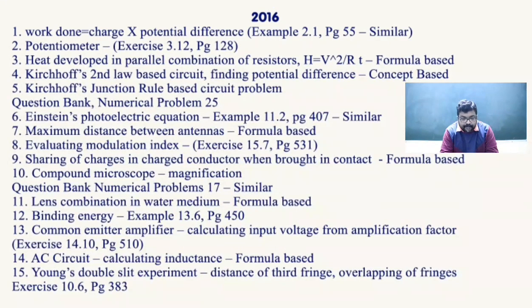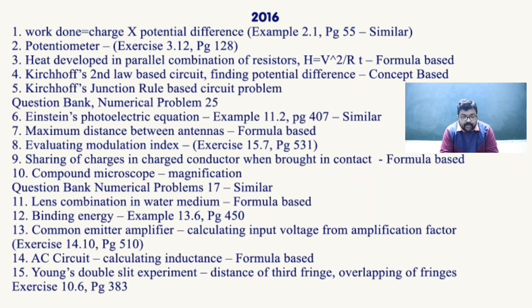In 2016: work done — charge into potential difference — Example 2.1, page 55. Potentiometer-based question — Exercise 3.12, page 128. Heat developed in parallel combination of resistors — formula based. Kirchhoff's second law circuit question — concept based. Kirchhoff's junction rule — Question Bank Numerical Problem 25. Einstein's photoelectric equation — Example 11.2, page 407. Maximum distance between antennas — formula based. Modulation index — Exercise 15.7, page 531.